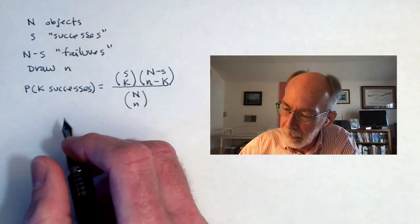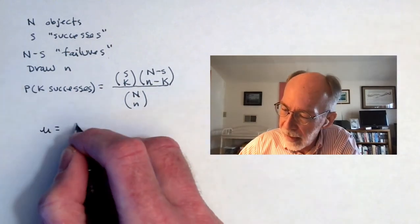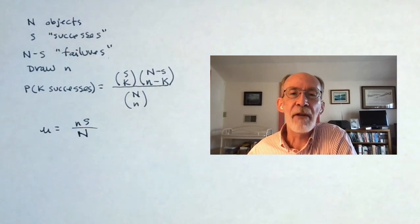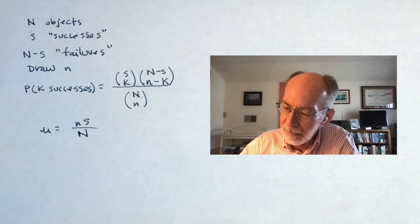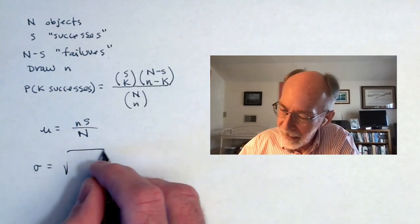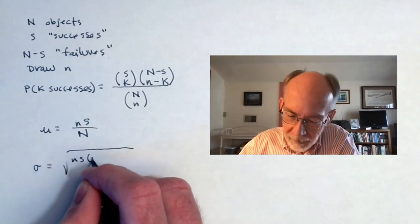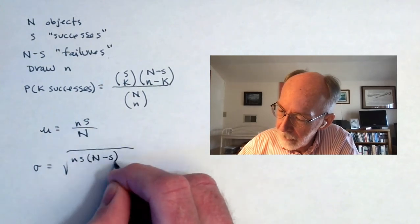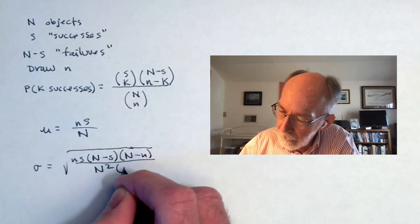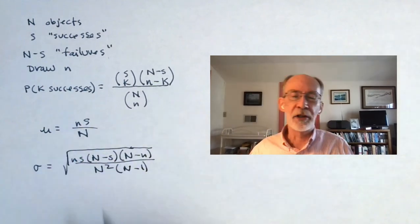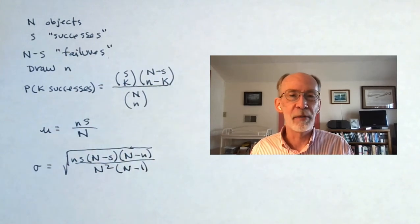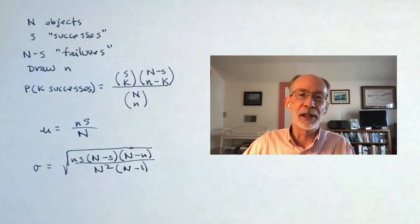Again, for the record, the mean of this distribution is little n times S divided by big N. There is a formula for the standard deviation. I have never in my life used it. But just for the record, it looks like this. Should you ever have occasion to want to know the standard deviation of some hypergeometric distribution, my advice would be to let some gadget do it. Find some statistics package that will crank it for you.